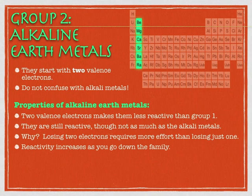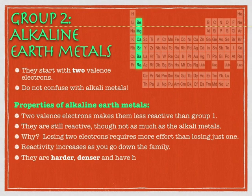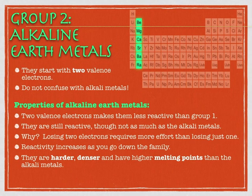Like the alkali metals, the reactivity will increase going down the family — like all metals. Due to some structural reasons, we'll talk about why that reactivity increases down the family a little later in the course. As you might suspect, alkaline earth metals are harder, denser, and have higher melting points. If you've ever handled a piece of magnesium, you'll notice it's definitely tougher than something like sodium metal.